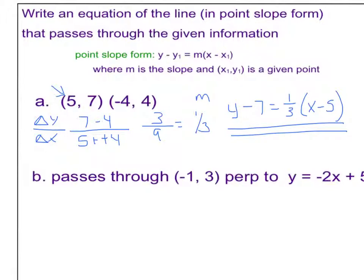All right, the next example. This is an equation for a line that passes through negative 1, 3, but is perpendicular to this equation. So what we know about perpendicular lines is that their slopes are opposite reciprocals.